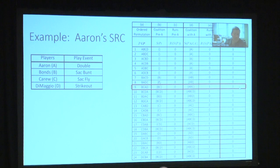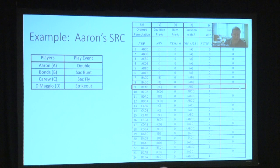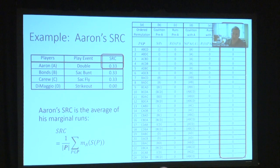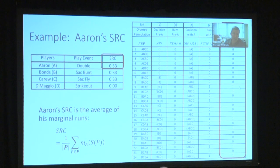When we get to order nine, things change. Before we add Aaron, we have Bonds and Carew — a bunt out and a fly out. That doesn't produce a run. But when we put a double in front of those, we produce a run. So Aaron's marginal contribution in this order is one run. When we do this calculation for all ordered permutations, we take the average of the marginal contributions — that is the Shapley value, which in this context I call the Shapley run credit.